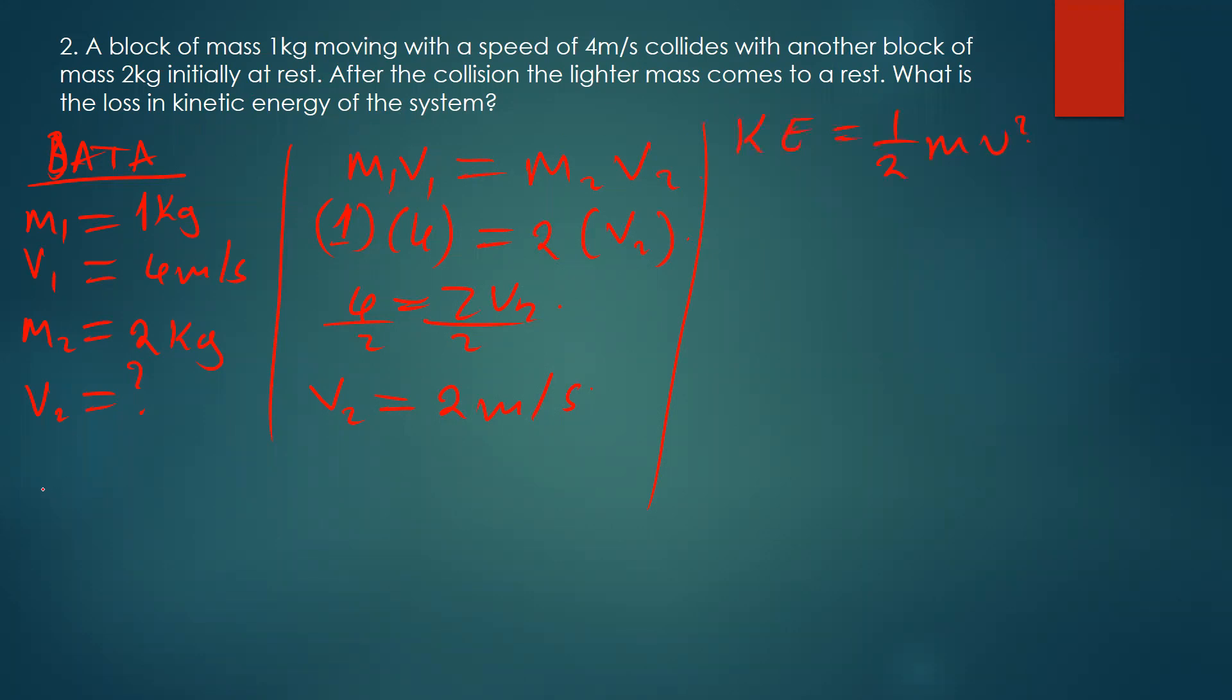Since they're asking us to find the loss, we're going to find the change in kinetic energy. The change in kinetic energy—whenever you see delta, this symbol means you're subtracting the initial from the final. So we have half m1 v1 squared minus half m2 v2 squared.